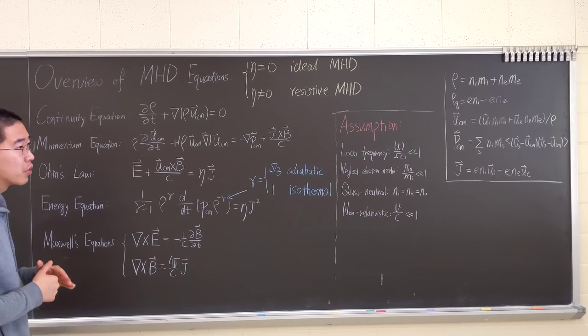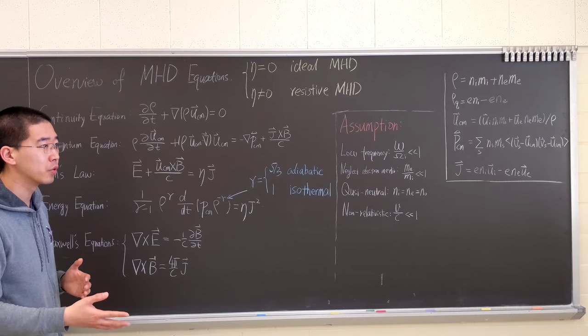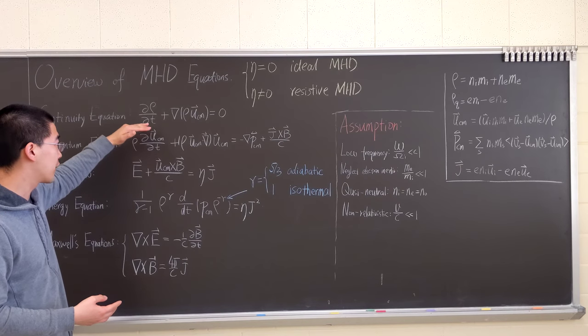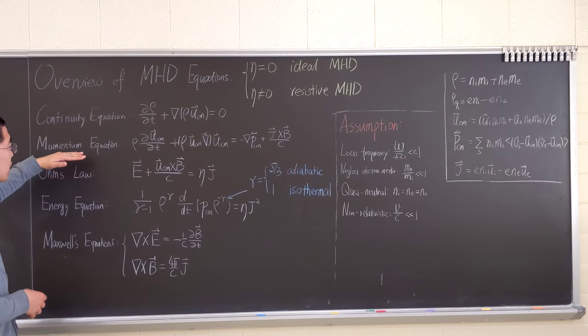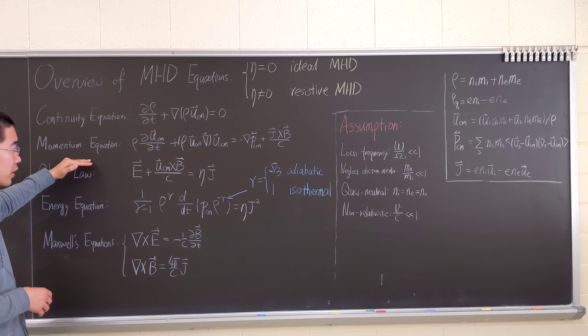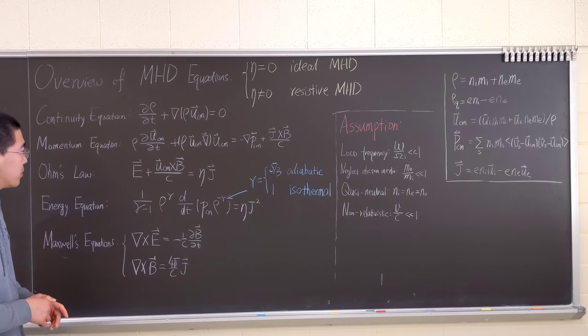We have the continuity equation. Pretty much from the fluid equation, we add two species together and we have this equation. Then we add the two species' first moment together, and we have this conservation of momentum.